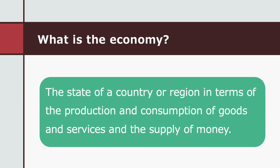So what is the economy? The word economy literally translates as 'household management' — it's based on ECOS, meaning house, and NAMIN, meaning manage. So: ECOS, NAMIN, ECONOMY. The economy is the state of a country or region in terms of the production and consumption of goods and services and the supply of money. We produce things, we make them, and we consume them — we buy them, eat them, use them. Goods and services. So the economy is the state of that balance.